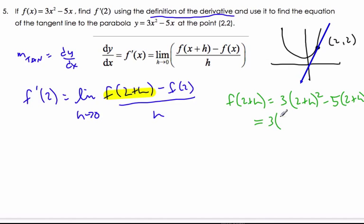Then I have to expand this out. So it's 3 times, expanding this out, I get 4 plus 4h plus h² minus 10 plus 5h, which is 12 plus 12h plus 3h² minus 10 plus 5h, which if I collect like terms, I get 3h² plus 17h plus 2. This is f at 2 plus h.